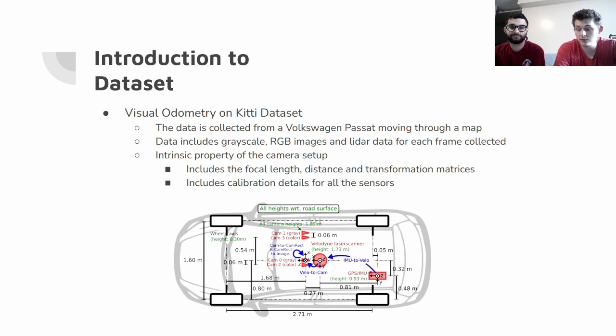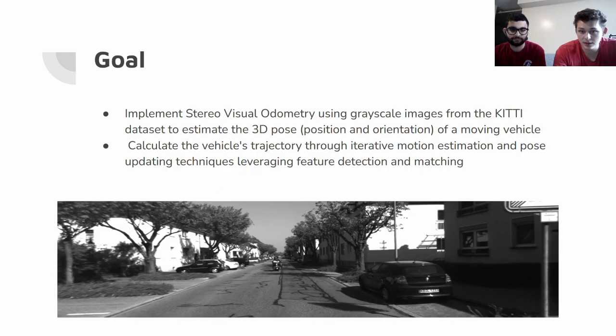The KITI dataset is a series, there's many datasets for computer vision. We're going to be using the visual odometry one. This is going to have grayscale images, Velodyne LiDAR data, ground truth poses, and intrinsic parameters from the setup, like transformation matrices between the two cameras in the stereo vision pair and the Velodyne LiDAR sensor. Intrinsic camera parameters like the focal length. We're not going to be using the RGB images.